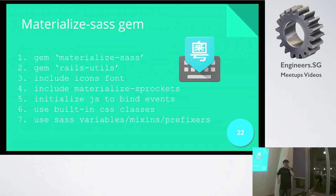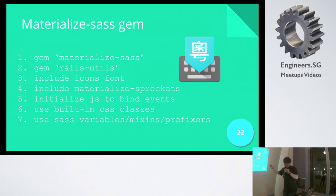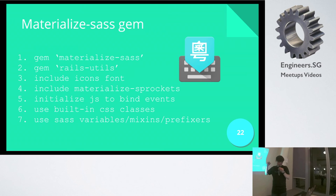So how do you use material design in your code today? All you need is to add these two lines in your gem file: 'gem materialize-css' and 'gem rails-utils.' You have to include the icons font to utilize all the icons, include materialize-sprockets so all the JavaScript goes into your assets pipeline, initialize JS and bind some of the events you want to use, and you can use the built-in CSS classes as well as the SASS variables, mixins, and prefixes.